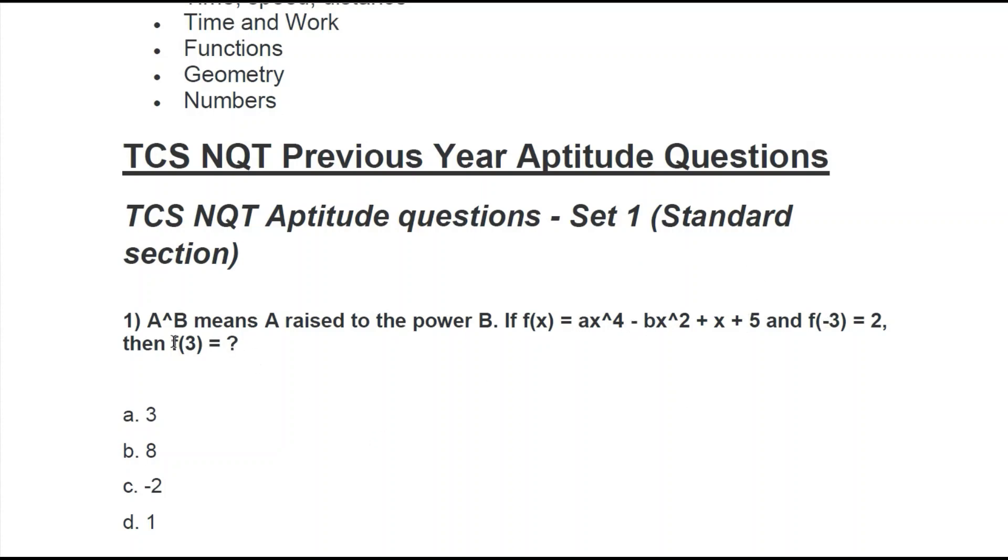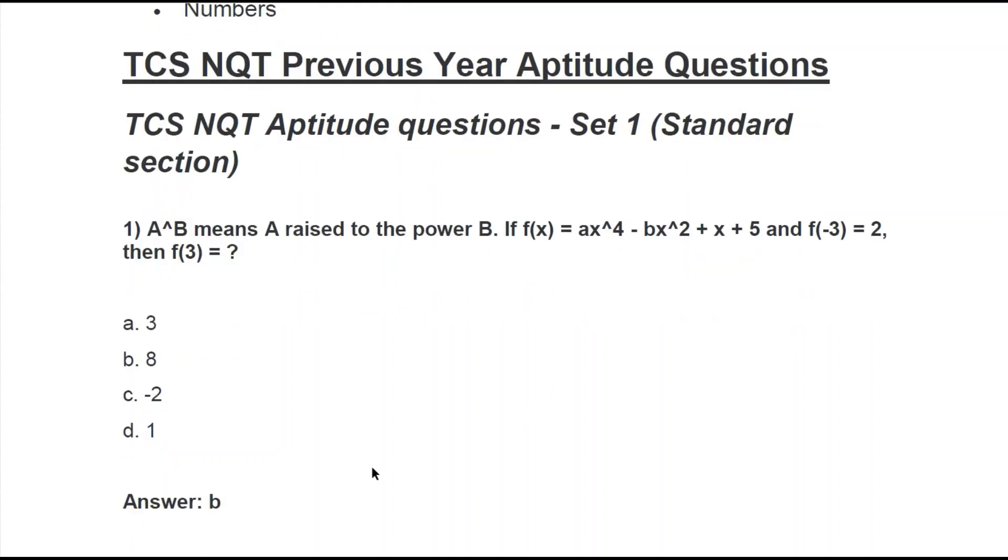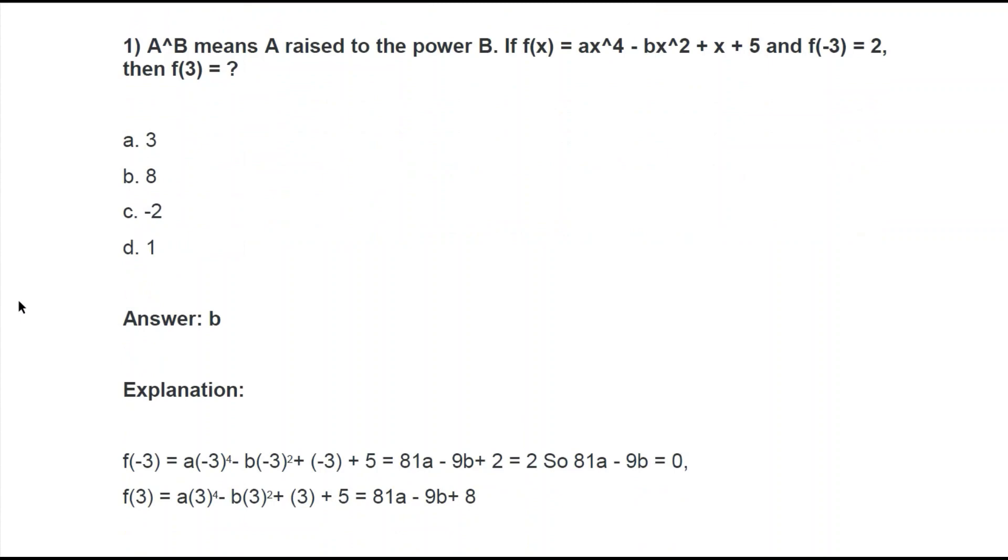Next, when we find f(3), we put 3 in place of x in the same equation and we will get another equation with a and b. Let's see how they proceeded with the sum. The answer is b.